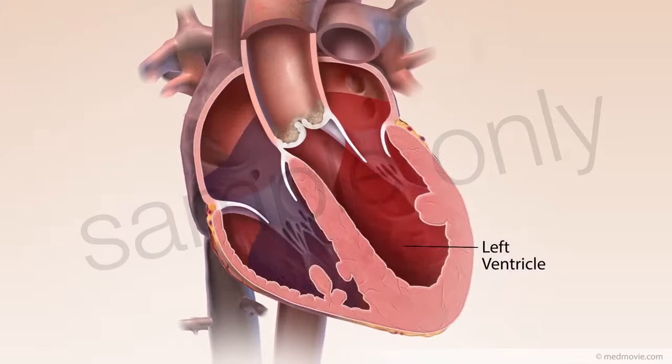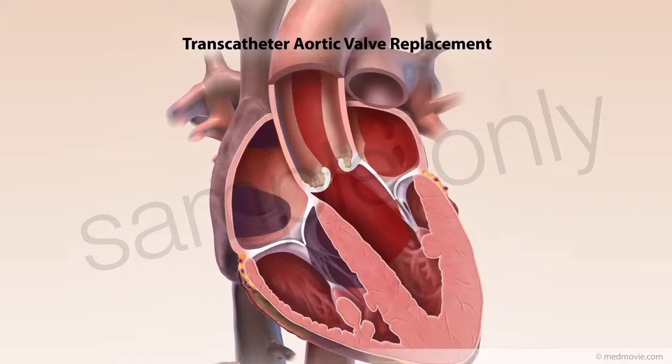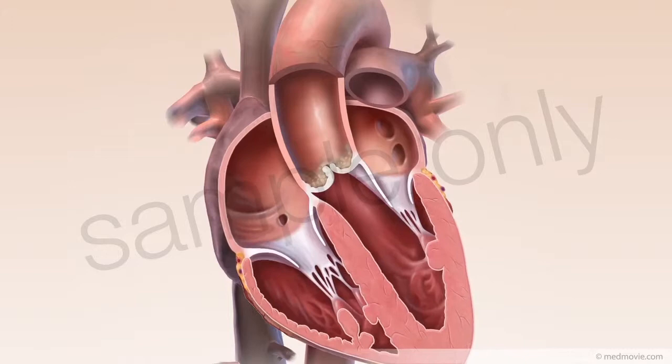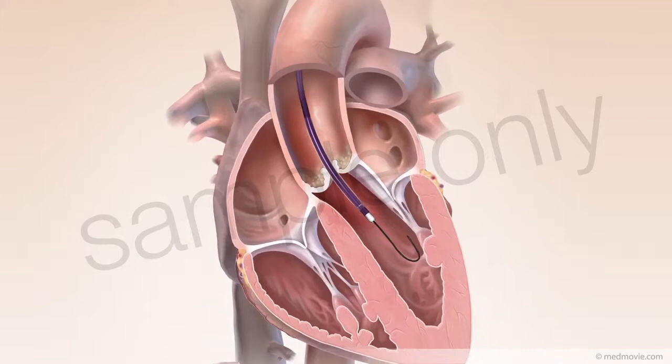During transcatheter aortic valve replacement, a guide wire is inserted through a small incision in the thigh and up the aorta and through the stenotic valve. A balloon catheter is then passed over the guide wire. This balloon is inflated to prepare for the placement of the replacement valve.